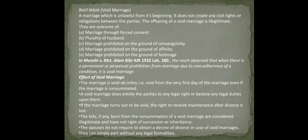The second circumstance is plurality of husbands, i.e., polyandry. If one woman has multiple husbands — meaning if a woman's husband is alive and she has not obtained a proper divorce and observed the required Iddah period, and she remarries — then that marriage is void. Third, marriage prohibited on the ground of consanguinity — a person related by blood cannot marry within prohibited degrees. For example, a husband cannot marry his mother, grandmother, daughter, or granddaughter, as they share a common ancestor.